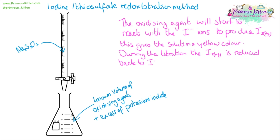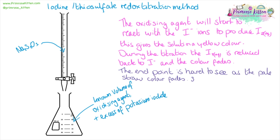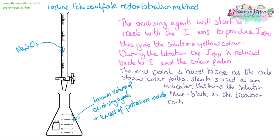As the titration goes on, the iodine is going to get reduced back to iodide, and the color is going to fade. This makes the endpoint rather hard to see as it's a rather subtle color change. This is where we can start to use starch as an indicator — this gives the solution a nice blue-black color. As we get closer to the endpoint of the titration, the blue-black color will start to disappear, and when the blue-black color has gone, that will be the endpoint of our titration.